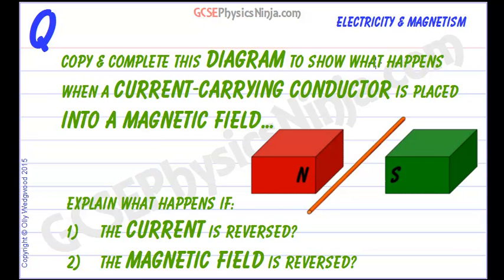Copy and complete this diagram to show what happens when a current carrying conductor is placed into an external magnetic field. So what we're going to do is make a current flow along this wire and it's placed into or between two poles of an external magnet.